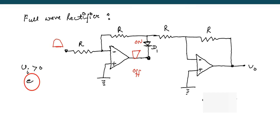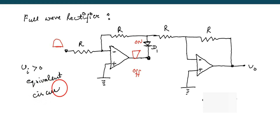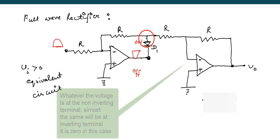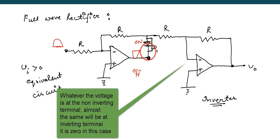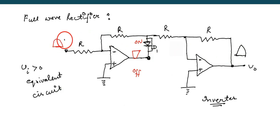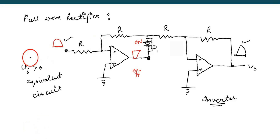When the positive half appears, this equivalent circuit shows the first op-amp is an inverter, so the inverted signal appears and D1 is shorted. Then the second op-amp is also inverting — it again inverts the output of the first op-amp. So the final output is in phase with the input signal; whatever the shape of the input signal, the same appears at the output.